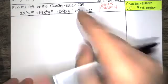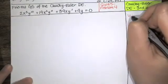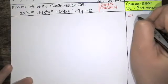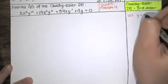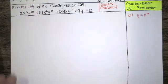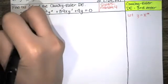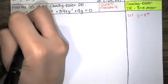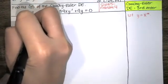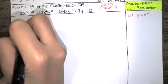It happens to be a homogeneous equation, so we're going to start by letting y equal x to the m for some unknown value of m to be determined. Since it's a third order equation, we'll compute three derivatives.